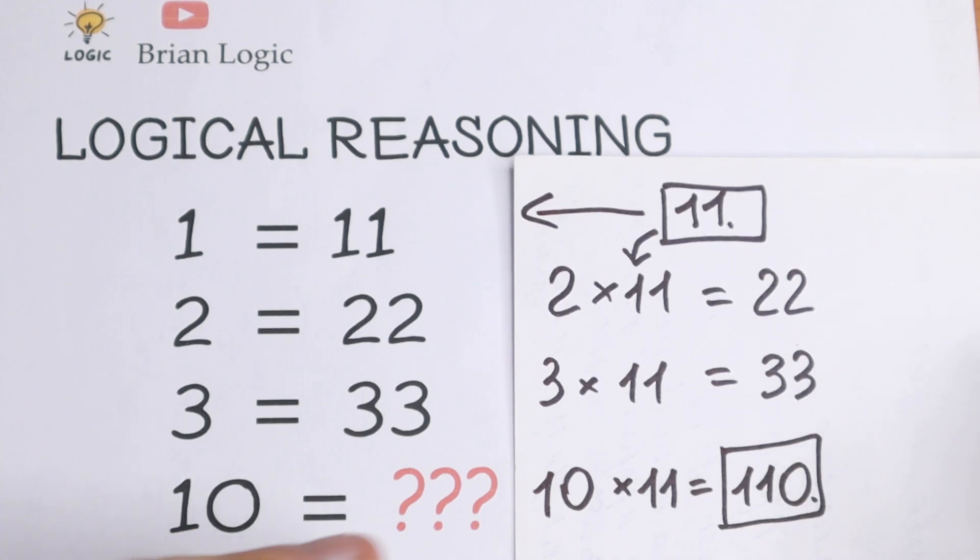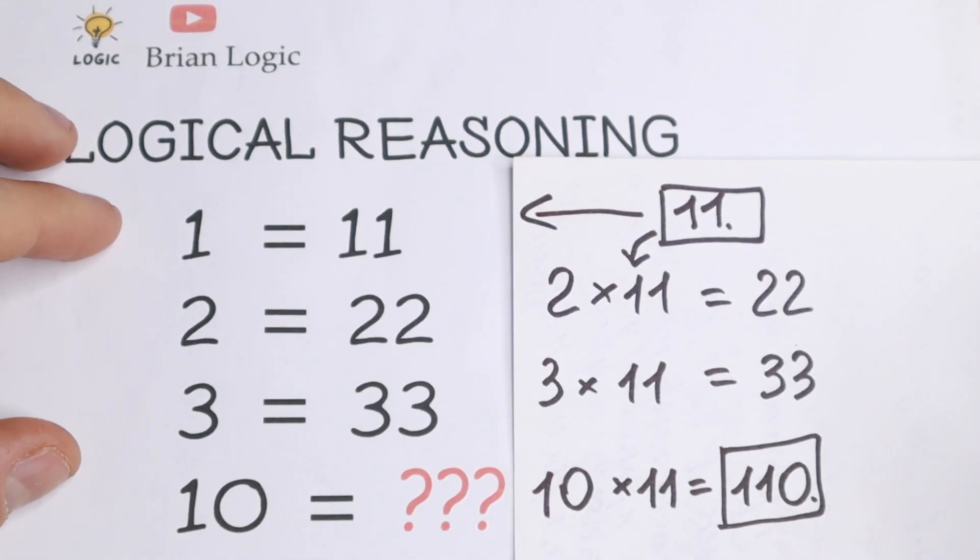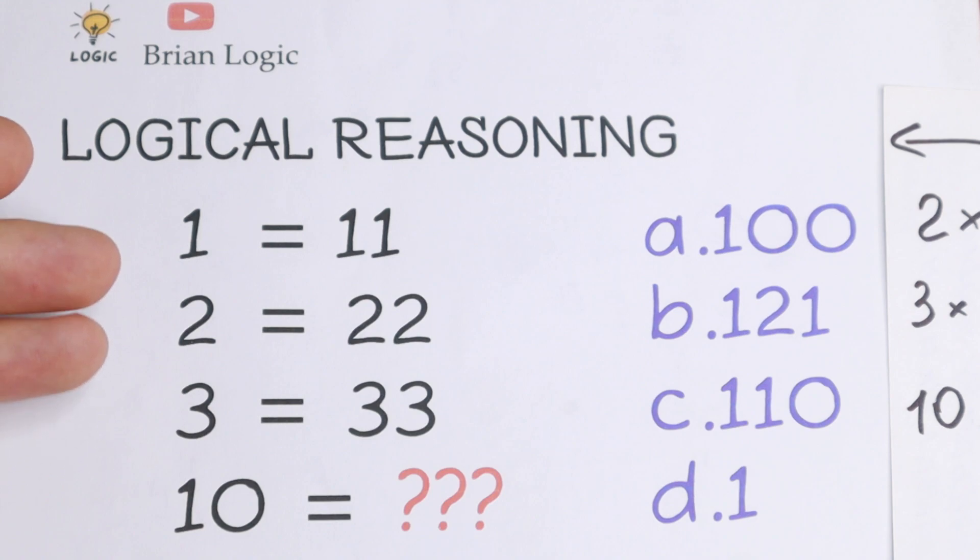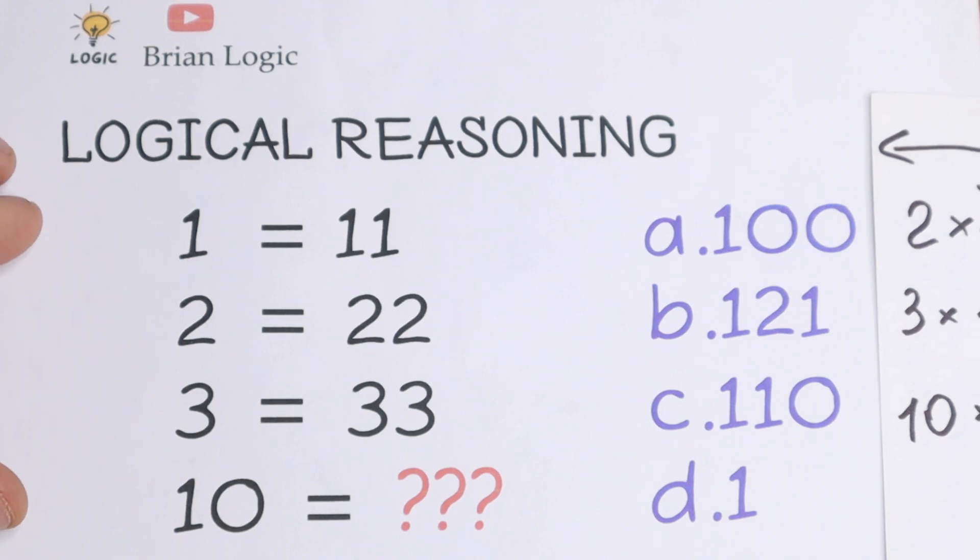What do you think about this solution? What is your pattern between all these numbers? The answer is option C. Write your suggestions in the comments about your solution, your approach to this interesting question. My option is C, what about you? Write your answer in the comments.